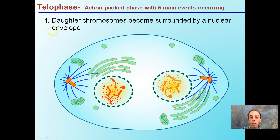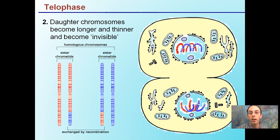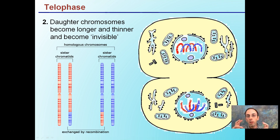During telophase, daughter chromosomes become surrounded by a nuclear envelope, forming that protective nucleus over the DNA structure. Also, daughter chromosomes become longer and thinner and become invisible — going from a condensed state to a very relaxed state. They become invisible because they're becoming thinner and more single-stranded rather than a dense coil, making it easier for DNA replication of genes needed by the cell.